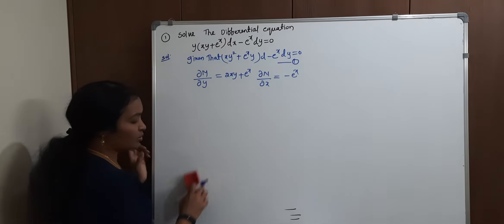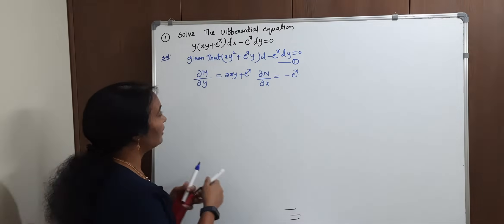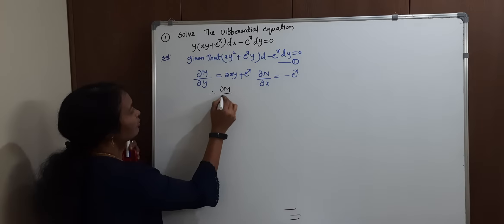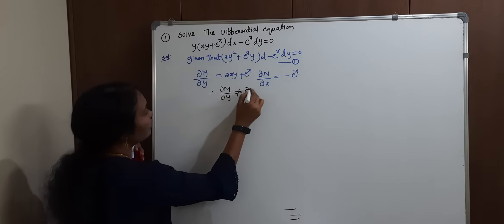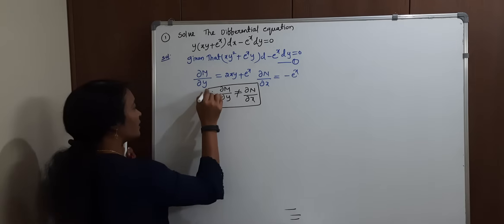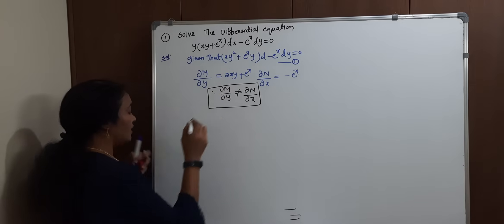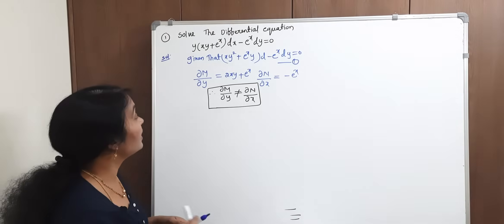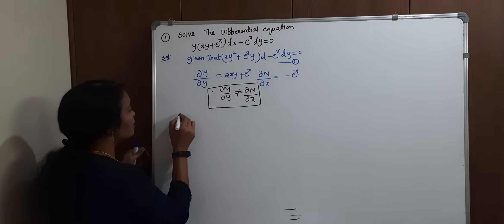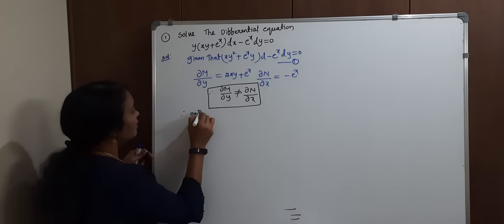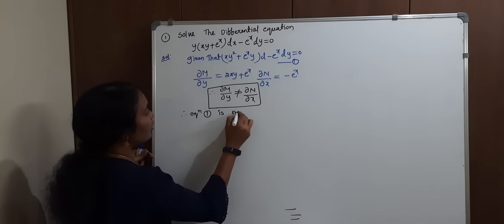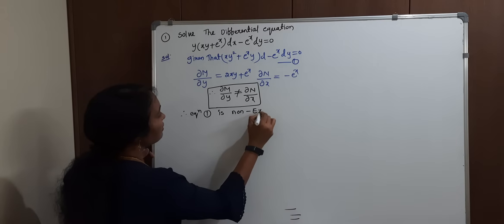Are both equal? No. Therefore, dou M by dou y is not equal to dou N by dou x. Therefore, the given equation 1 is a non-exact differential equation.